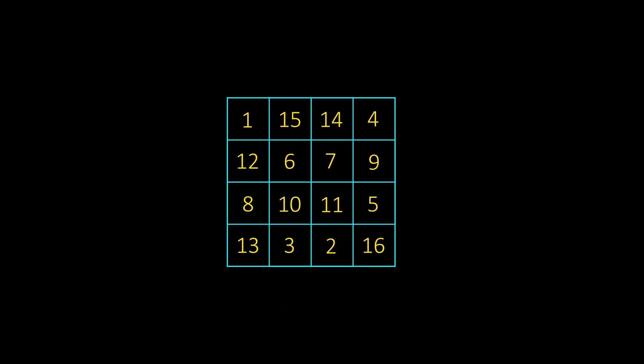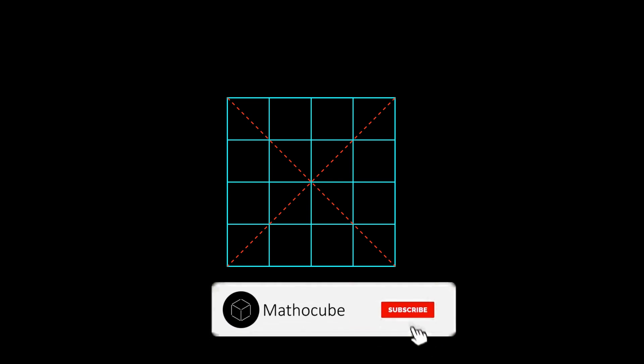Now let me show you how to make this 4 by 4 magic square. So first draw the main diagonal and you start counting. But you only write down the number if it falls on the main diagonals. If it doesn't fall on the main diagonal, then you keep the count but don't write the number.